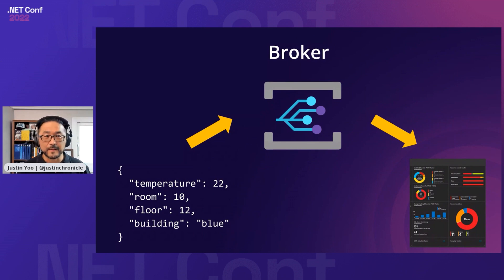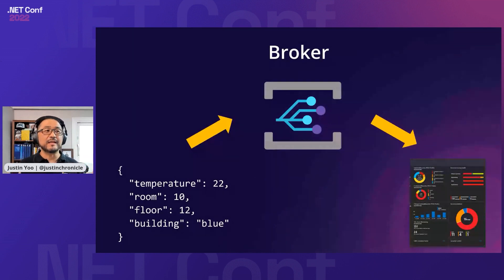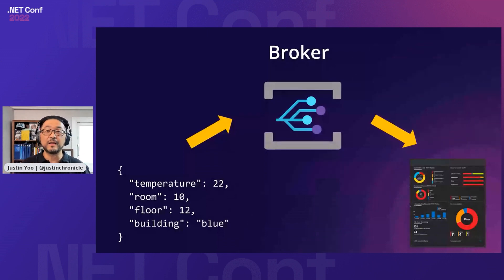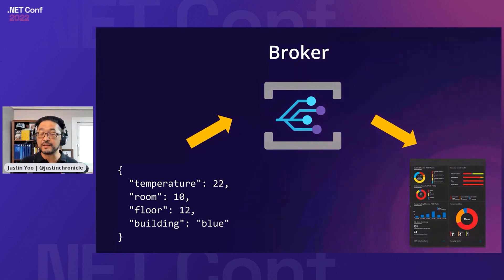Another one is the event broker. The event broker is typically located between the event publisher and event subscriber side. What it really does is decouple between the publisher and the subscriber side so they work asynchronously. Without an event broker, they are tied to each other with dependencies. So the event broker takes the message from the publisher side and delivers it to the subscriber side, ensuring every event is delivered properly. Azure Event Grid is one of the event broker services in Azure, alongside Azure Service Bus, Event Hub, and others.